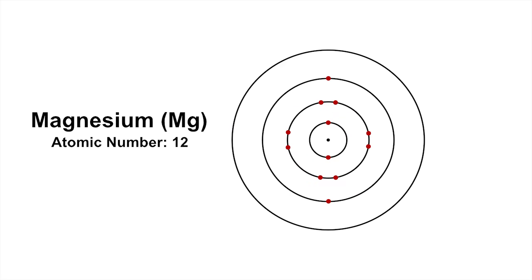Sodium is Na, Magnesium is Mg, Aluminium is Al, and Silicon is Si.